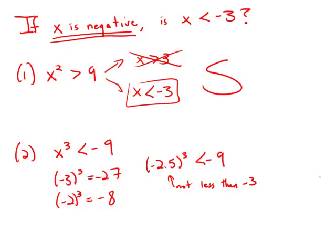Of course, we could also pick values for x. We could pick x equals negative 10, in which case negative 10 cubed is negative 1,000, which is less than negative 9. This is an x that is less than negative 3.